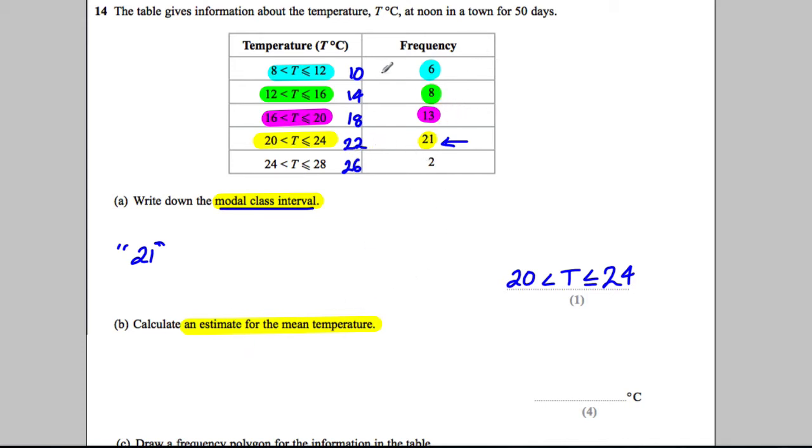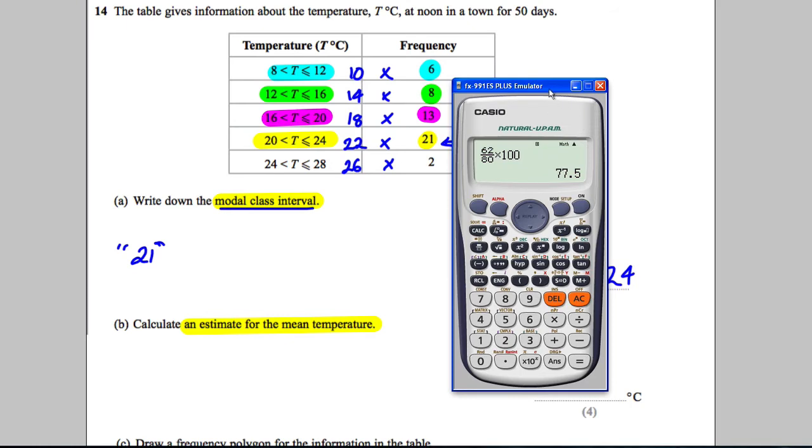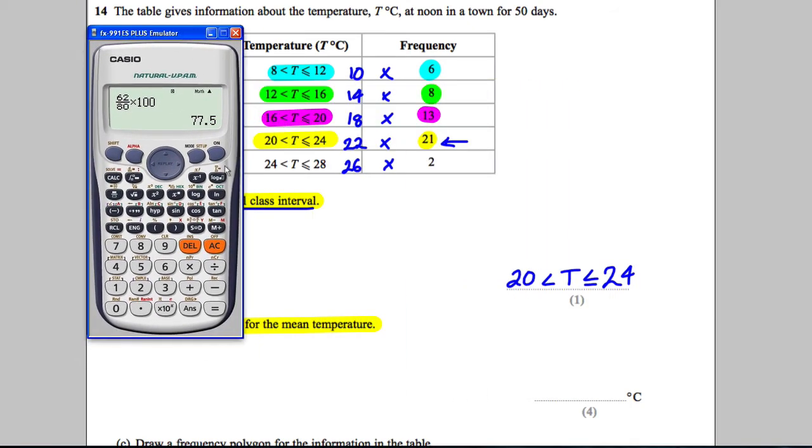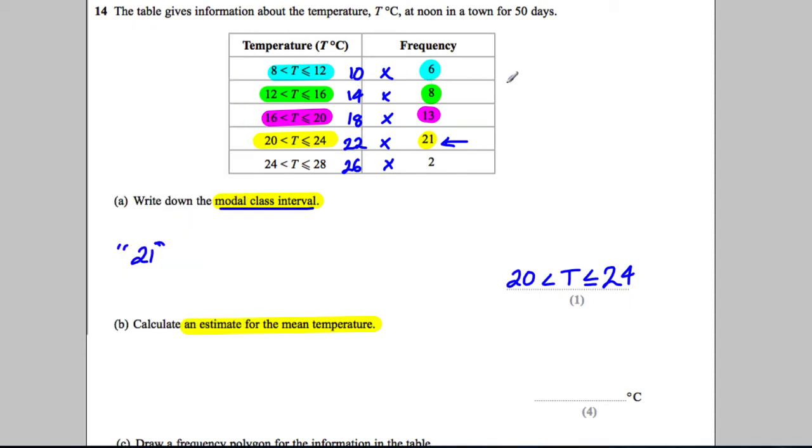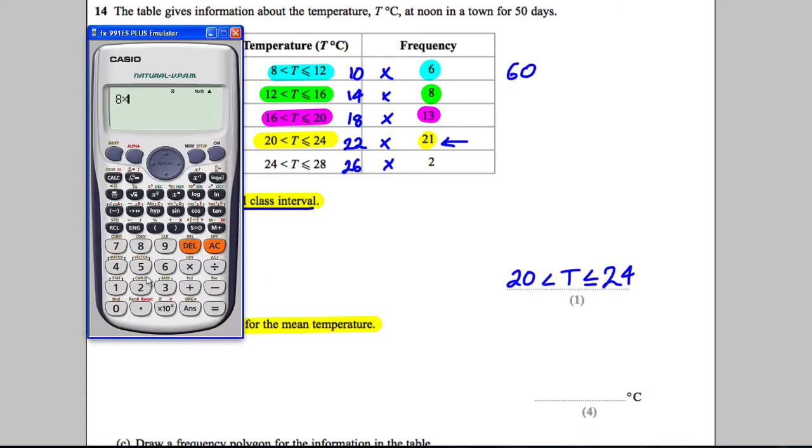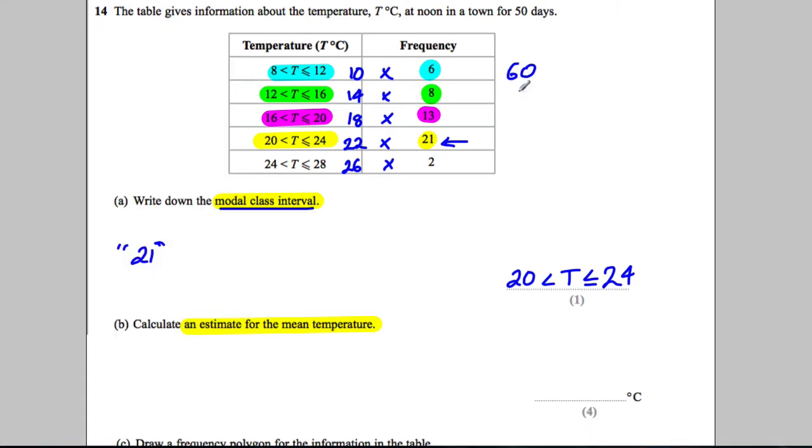And to work out the mean, we multiply these together. So we're going to multiply those together. Get our calculator ready. So we have 10 multiplied by 6, which is clearly 60. We have 8 multiplied by 14, which is going to be 112.